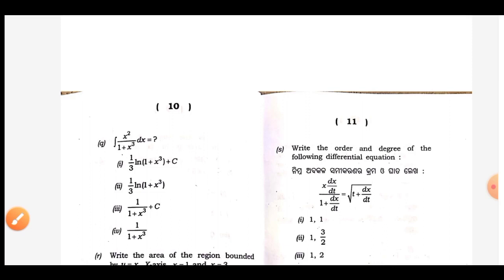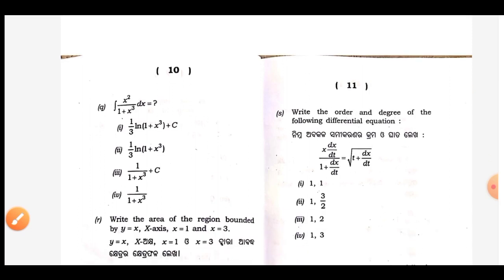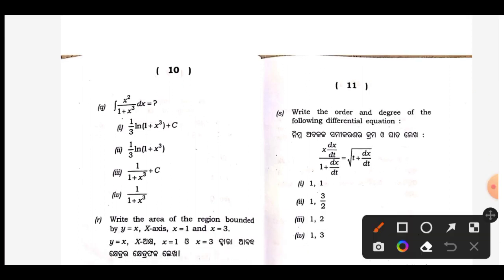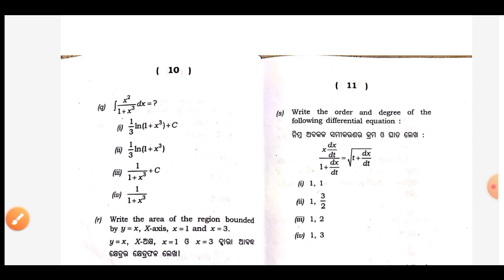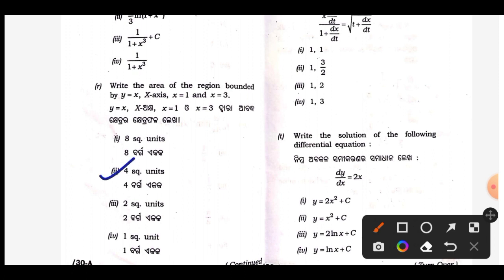Q — answer is bit 1. The answer is 1 by 3, learn something plus C. R number — answer is 4 square units, bit 2.